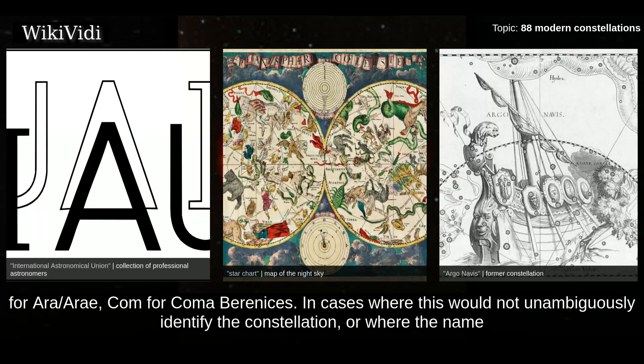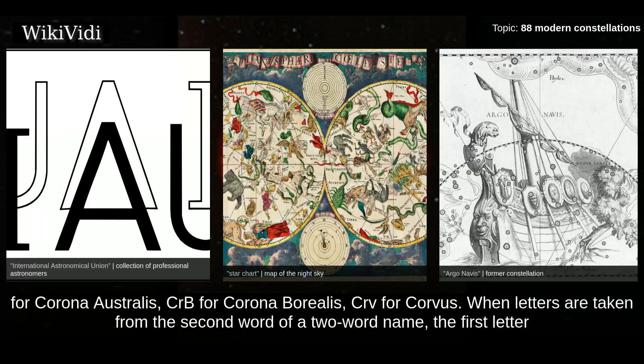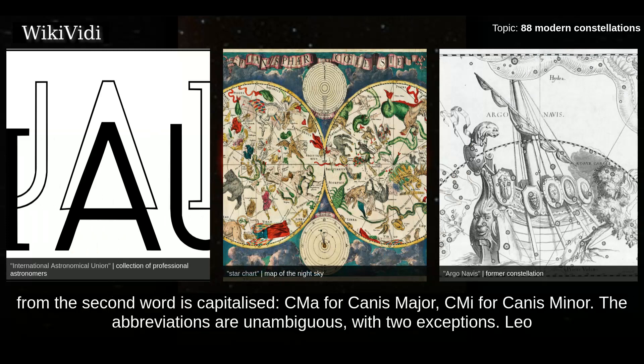In cases where this would not unambiguously identify the constellation, or where the name and its genitive differ in the first three letters, other letters beyond the initial three are used. When letters are taken from the second word of a two-word name, the first letter from the second word is capitalized — for example, CMa for Canis Major, CMi for Canis Minor.